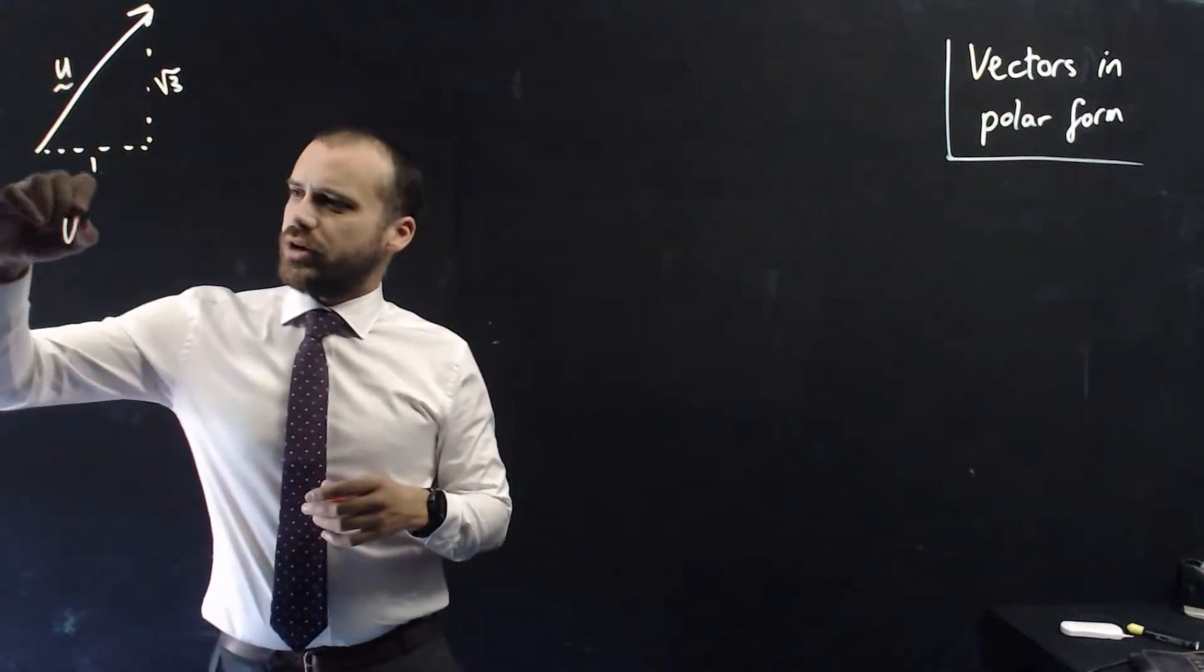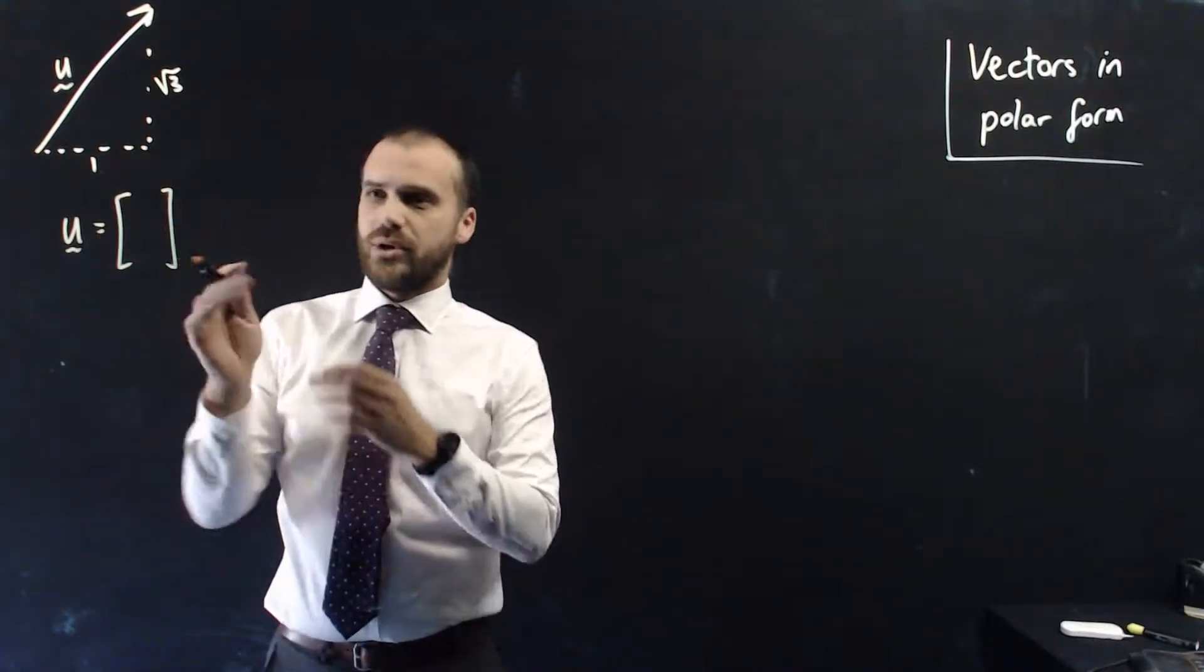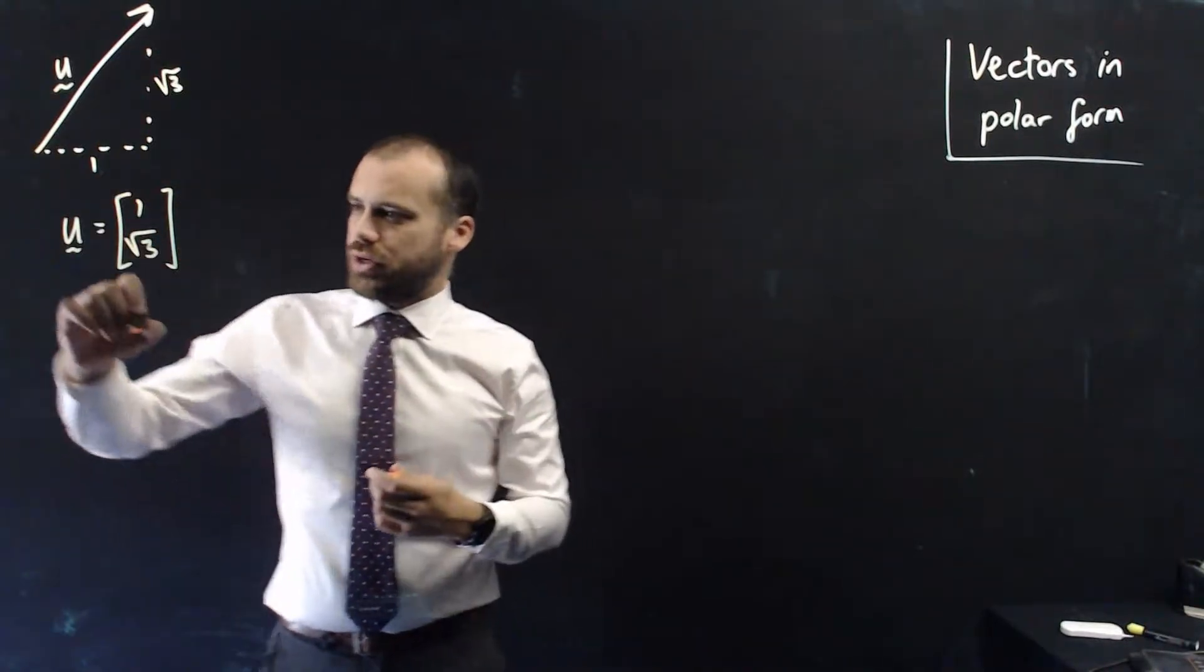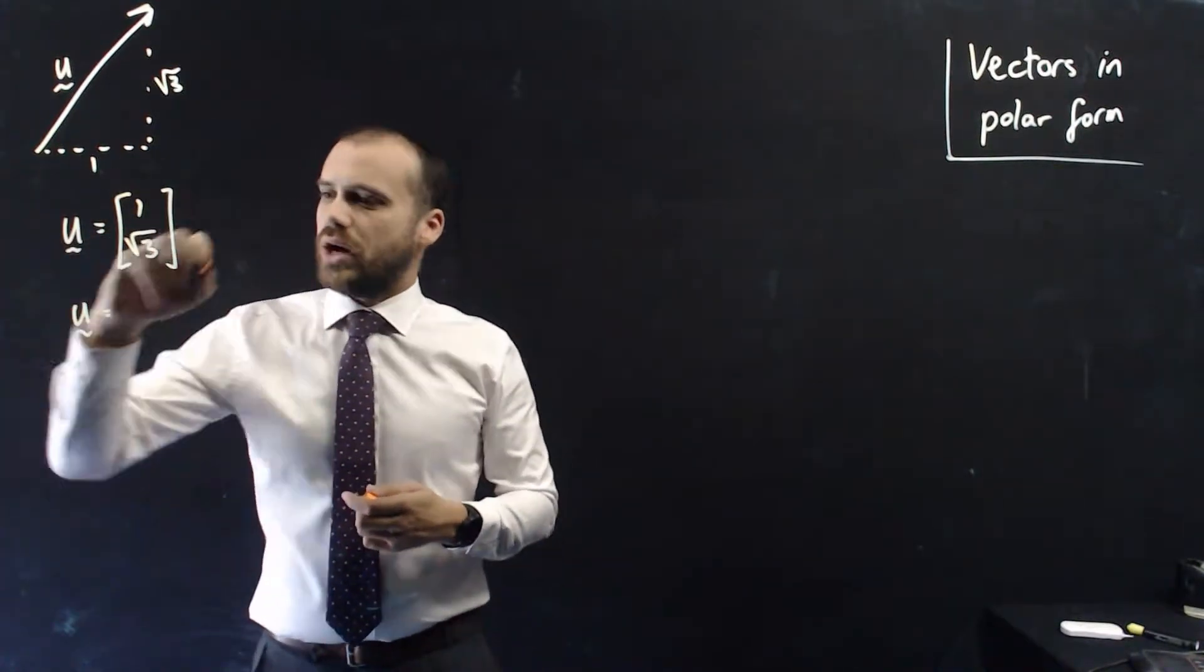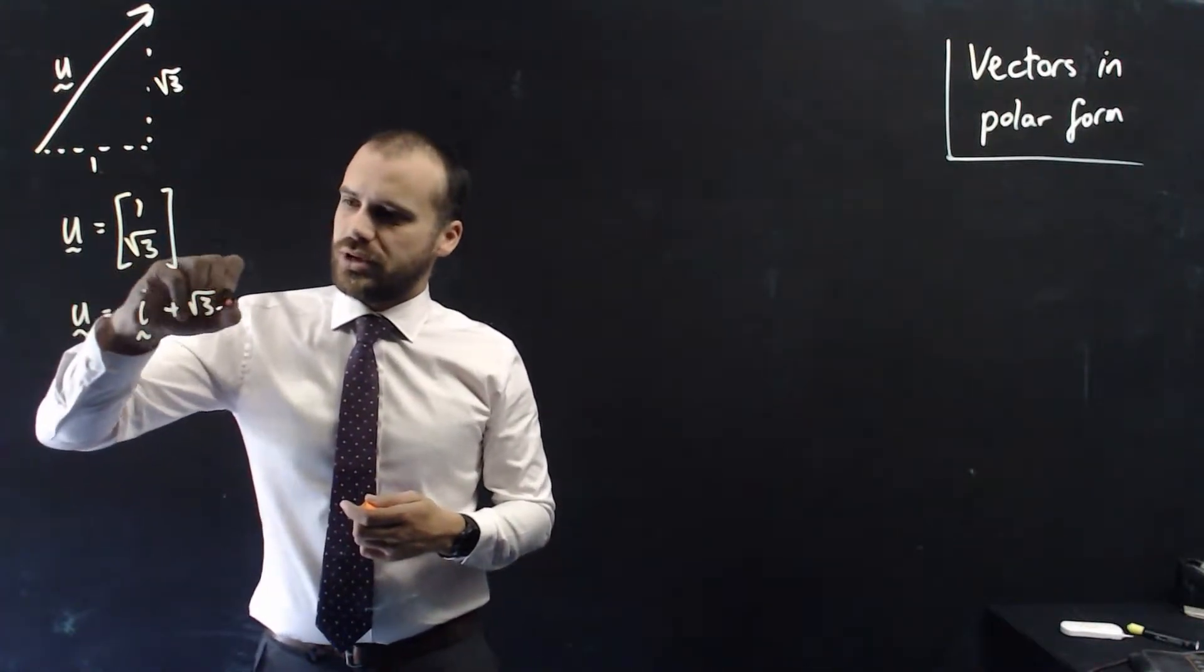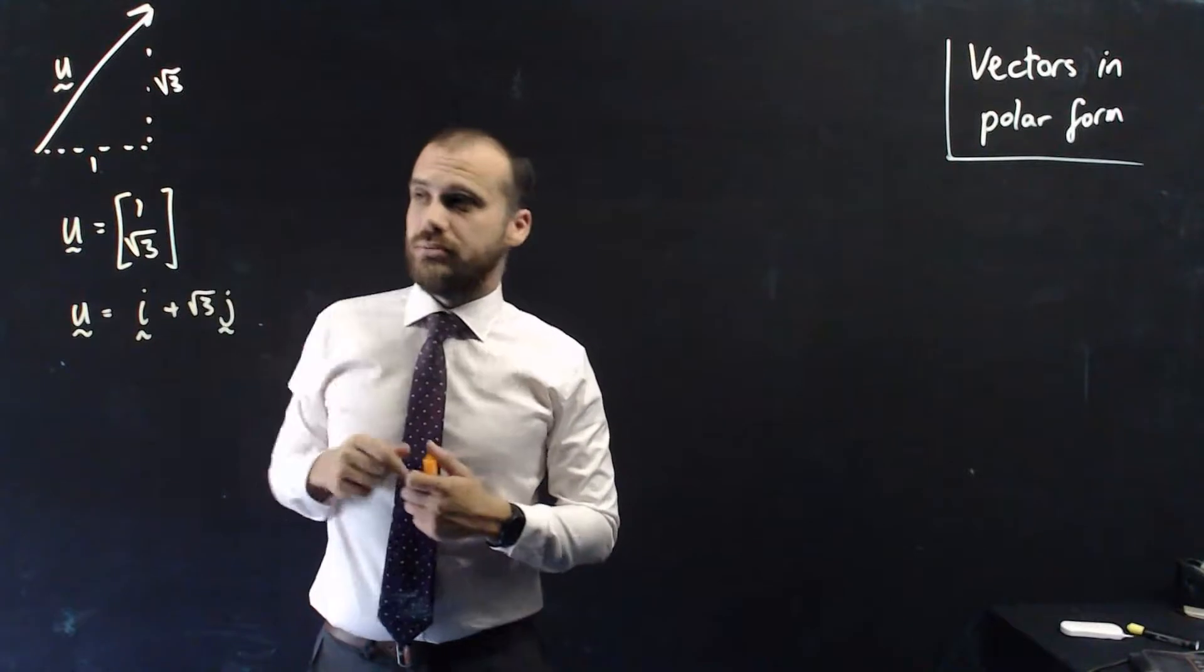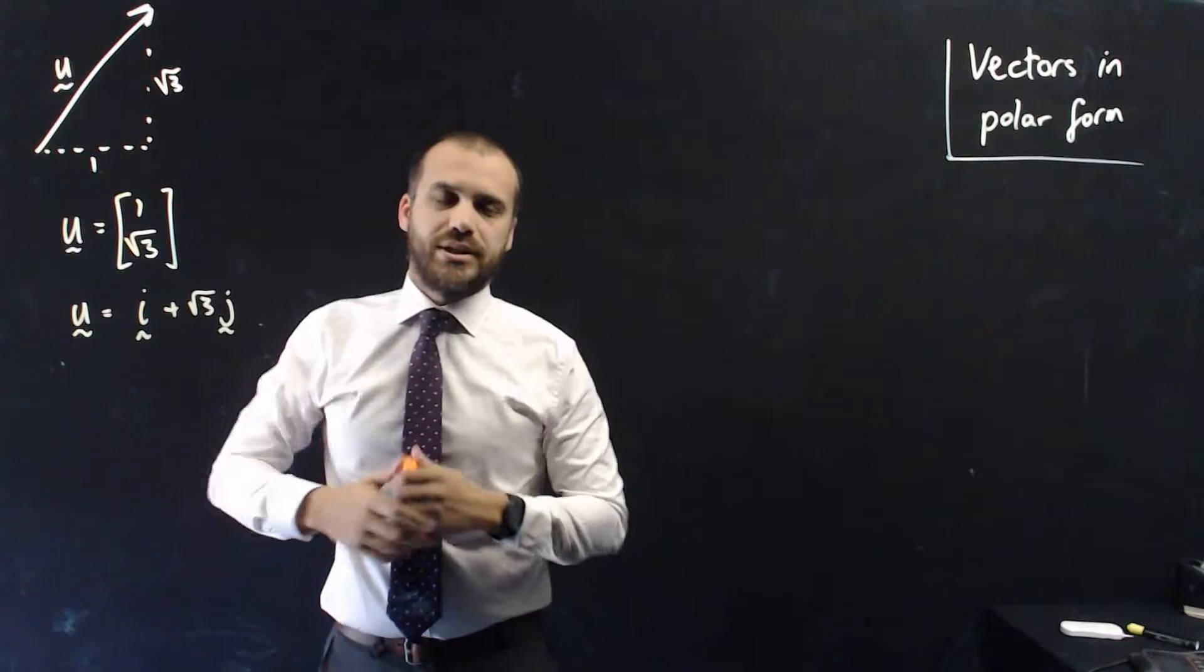you might write it as a column matrix, so you might say that it's 1 across and root 3 up. You might also write it in i and j components, so you might say that it is 1i plus root 3j. Now, essentially both of those are the same thing. It's saying this arrow can be broken into its horizontal components and its vertical components, and that's how I'm going to tell you about it.